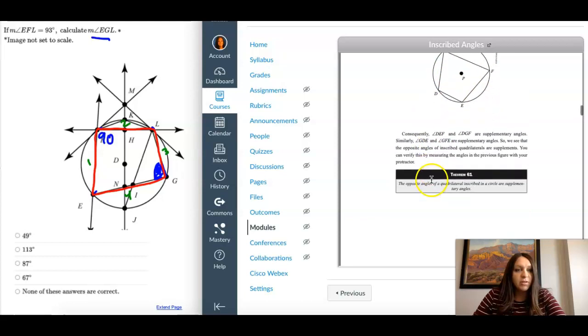So again, I'm going to go back to my notes and look at my theorems. Here we go, a quadrilateral inscribed in a circle. So opposite angles of inscribed quadrilaterals are supplementary. So you need to know what that means. A supplementary angle means they add to 180.